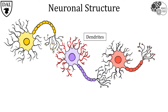Extending from the soma are highly branched structures called dendrites, whose main function is to receive messages from other neurons. As we saw, dendritic complexity can differ a lot depending on the neuron type. Neurons with many dendrites will have large total dendritic surface areas, which means they can receive many inputs from many other neurons.